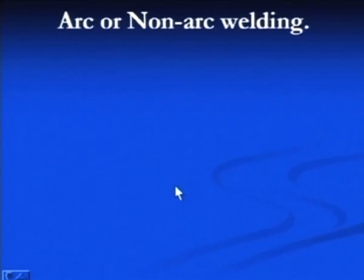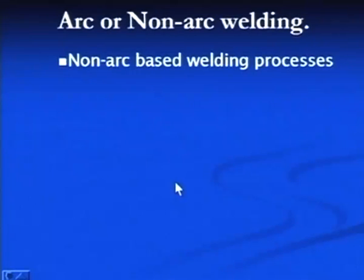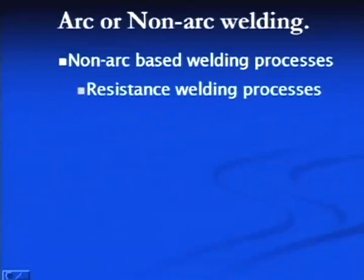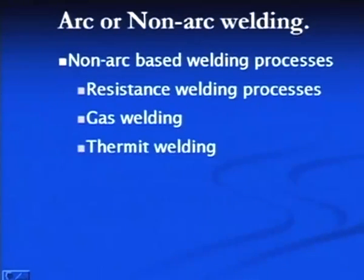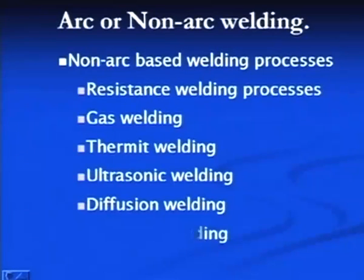Classification based on arc or non-arc welding processes shows that non-arc based welding processes include resistance welding, gas welding, thermite welding, ultrasonic welding, diffusion welding, and explosive welding.